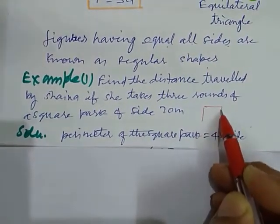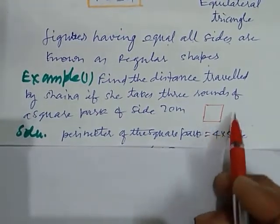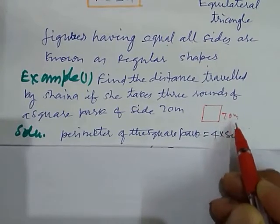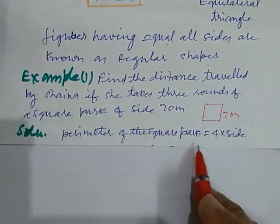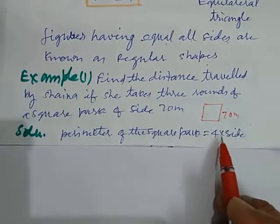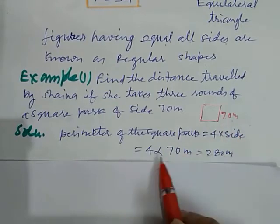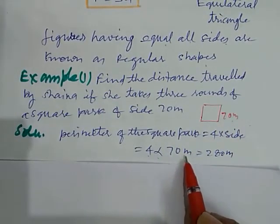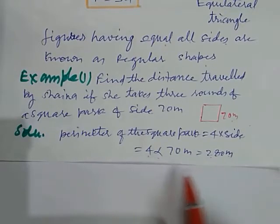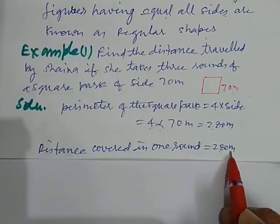Let this is the square park and the side of this is 70 meter. So perimeter of the square park is 4 into side as we learned previously. So by putting the value side equal to 70 meter, 4 into 70 equals 280 meter. So distance covered in one round is 280 meter.